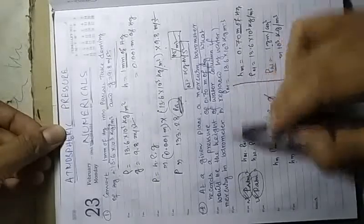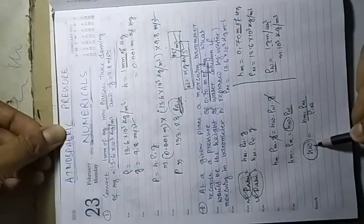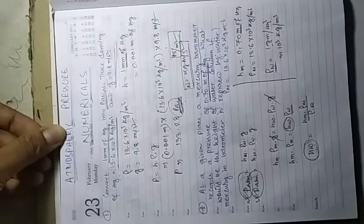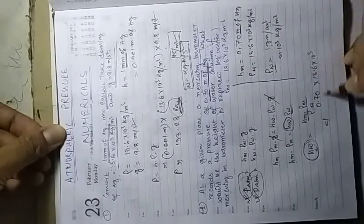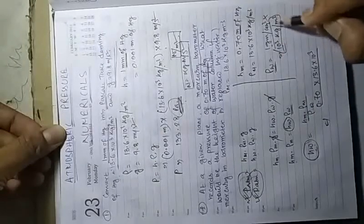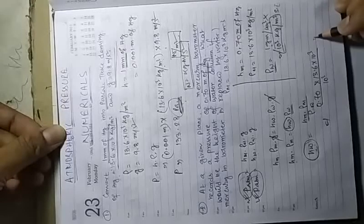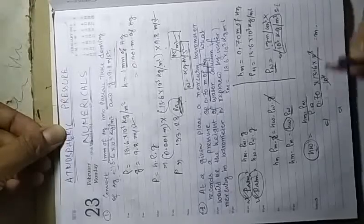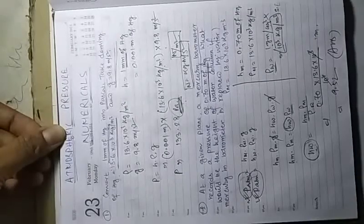We need to find the height of the water column if mercury in the barometer is replaced by water. Substituting values: h_water = 0.70 × 13.6 × 10³ / 10³. The 10³ cancels, so h_water = 0.70 × 13.6 = 9.52 m. The unit is meters. Answer: the height of the water column would be 9.52 m.